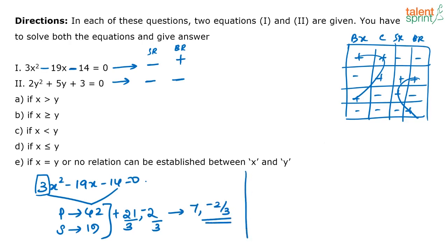Now next, take the next equation. 2y squared plus 5y plus 3 is equal to 0. So here what is the product of a into c? That is 3 into 2, that is 6. So product of two numbers is 6. Their sum is 5. Now what can be the two numbers? The two numbers has to be 3 and 2.